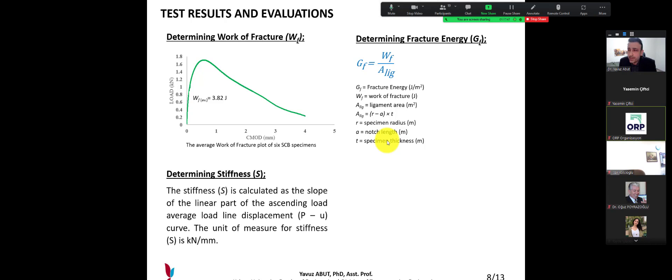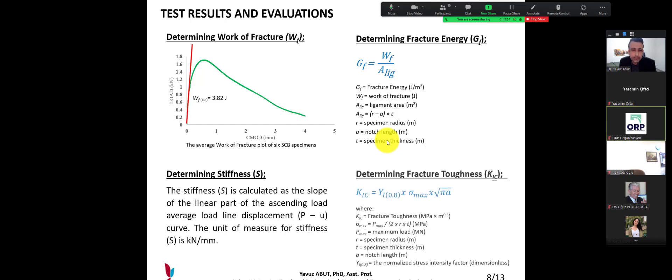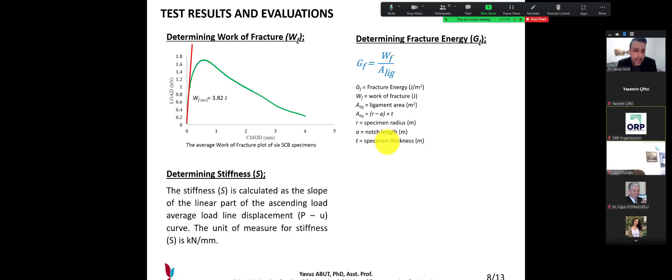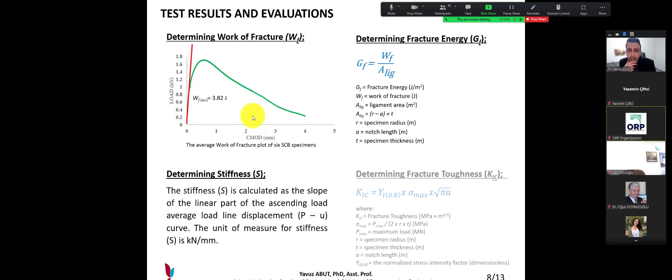The third part is about determining stiffness. Stiffness is the slope. It is calculated as the slope of the linear part of the ascending load average load line displacement P-U curve. The unit of measure for stiffness is kN per mm.